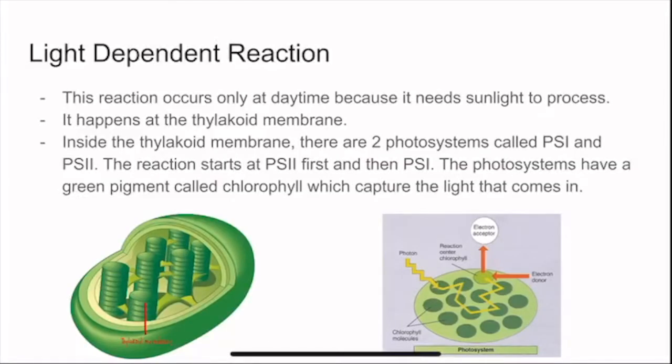This reaction occurs only at daytime because it needs sunlight to process. It happens at the thylakoid membrane. Inside the thylakoid membrane, there are two photosystems called Photosystem I and Photosystem II. You can call them for short PS1 and PS2. The reaction starts at PS2 first and then PS1. The photosystems have a green pigment called chlorophyll, which captures the light that comes in.